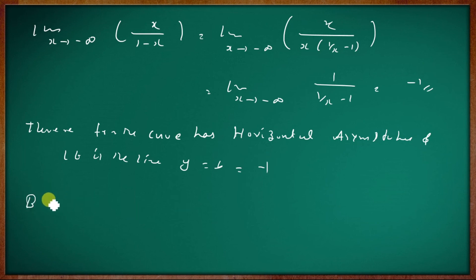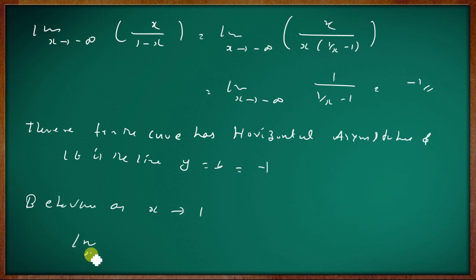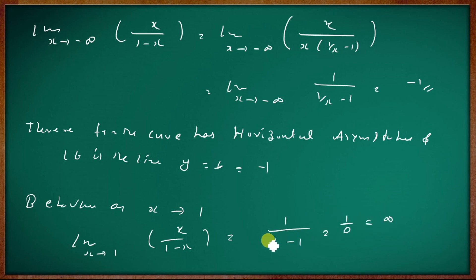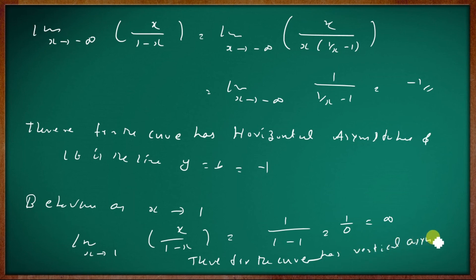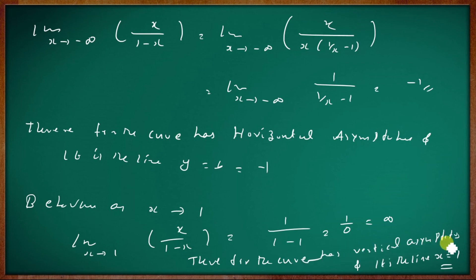Therefore, the curve has a horizontal asymptote and it is the line y equal to minus 1. For vertical asymptotes, the behavior as x tends to 1: the limit as x tends to 1 of x by 1 minus x equals 1 by 1 minus 1, which equals 1 by 0, equal to infinity. Therefore, the curve has a vertical asymptote and it is the line x equal to 1.